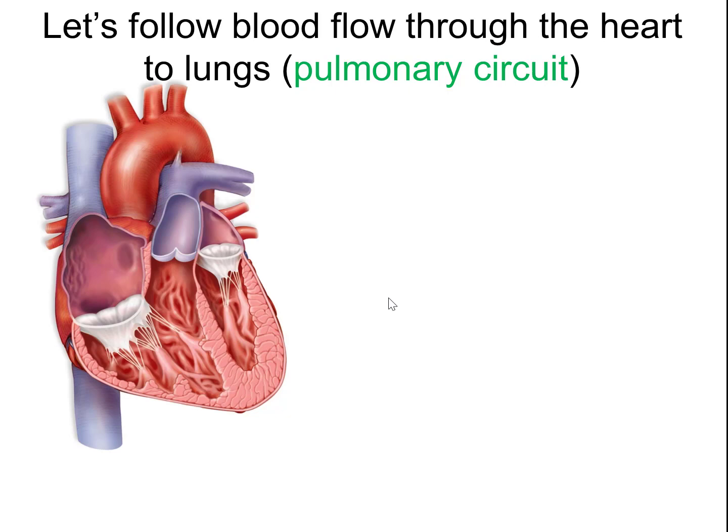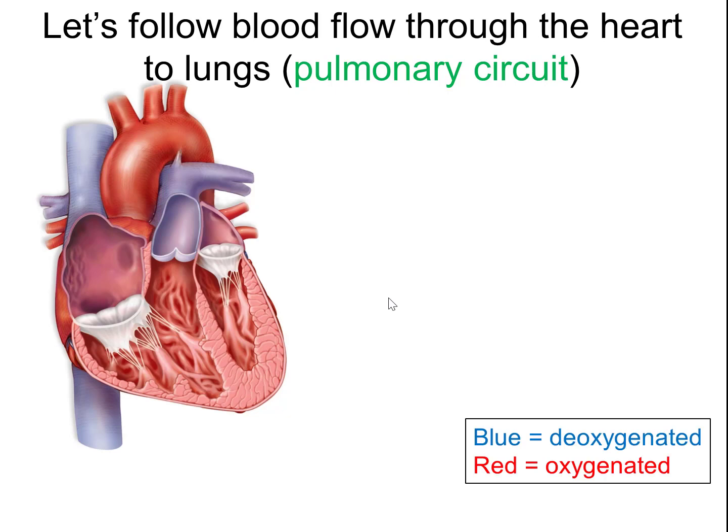Here's the color coding: if it's blue, the blood is deoxygenated — it does not have oxygen. This is the case if the blood has not gone to the lungs yet and hasn't picked up oxygen. If the color is red, the blood has oxygen — this occurs after the blood goes to the lungs, because that's where oxygen is picked up.